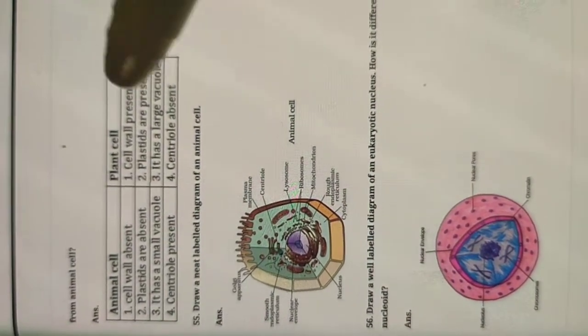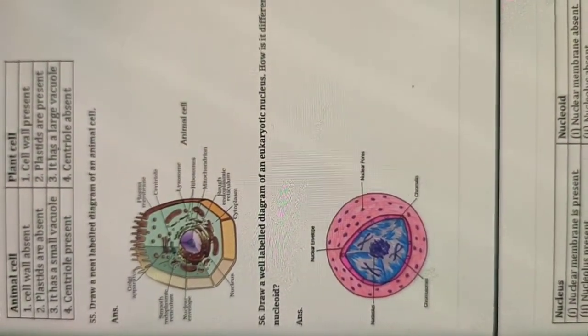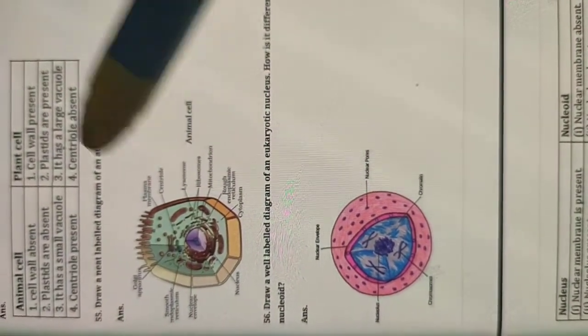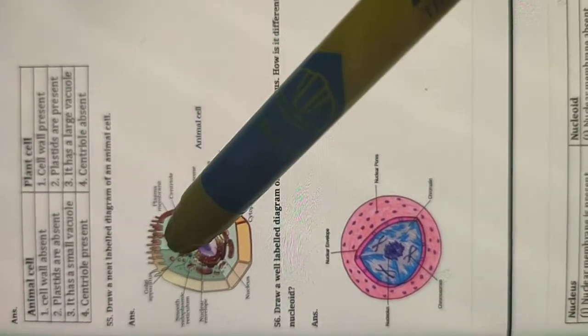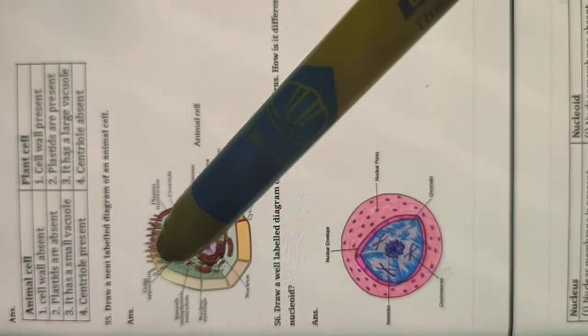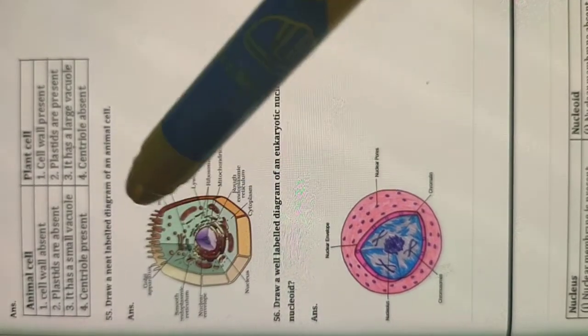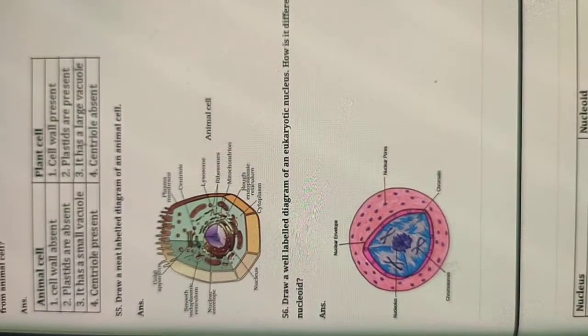The third question says: draw the diagram of an animal cell. The hair-like structures shown in the diagram represent villi — it is not necessary to draw those. You can draw an oval-shaped cell with all organelles. Remember that vacuoles are smaller in animal cells, plastids like chloroplasts are absent, there is no cell wall — only a cell membrane — and centrioles are present.